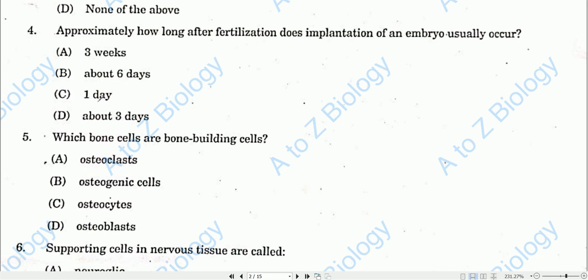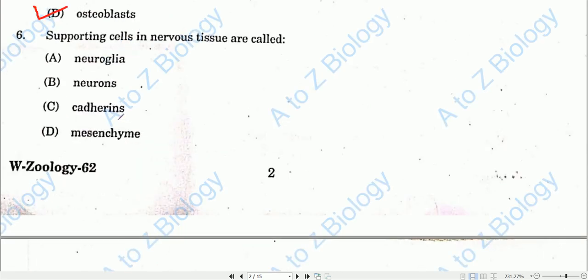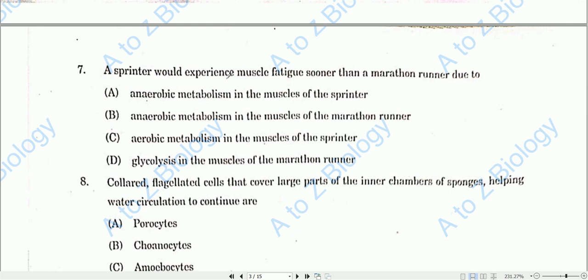Question number five: Which bone cells are bone-building cells? Osteoblasts are the bone cells that are bone-building cells. Question number six: Supporting cells in nervous tissue are called neuroglia.